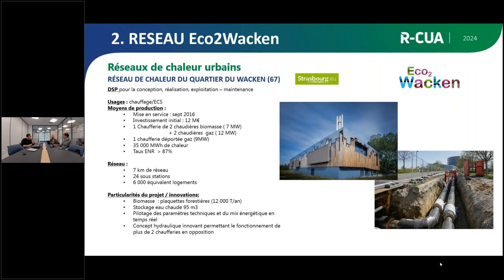On a également installé un ballon de stockage d'eau chaude de 100 000 litres. À l'heure actuelle, le réseau de chaleur en lui-même contient quasiment 7 fois plus d'eau que ce ballon, donc le premier stockage d'un réseau de chaleur, c'est le réseau lui-même. Pour la pose, on voit les deux tubes dans une tranchée — du diamètre 500 par tube — qui nécessitent des tranchées de 2 mètres de large dans des zones urbaines très denses en plein centre de Strasbourg, ce qui est très complexe en termes de gestion de flux routiers, de commerçants et de riverains.